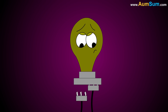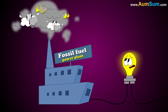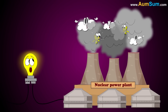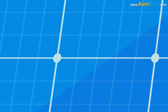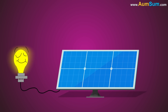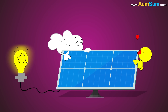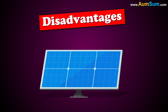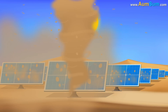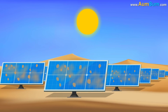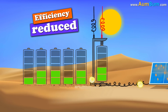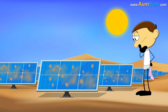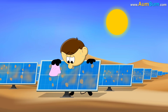Secondly, while generating electricity, fossil fuel power plants produce harmful gases and nuclear power plants produce radioactive waste. But solar panels produce electricity without causing harm to the environment. Now let's look at some minor disadvantages. Firstly, sandstorms in the desert would regularly cover the solar panels with sand, reducing their efficiency. Secondly, in a place where water is so scarce, cleaning the panels would definitely be challenging.